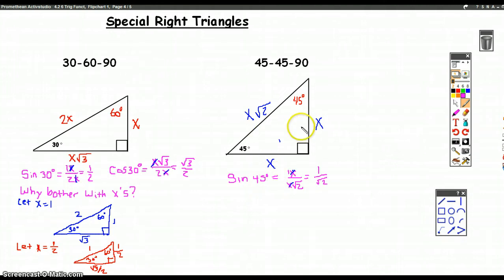So the same thing's going on here. We might as well, if the X's keep canceling, let's just do our favorite version of the 45-45-90. And mine, again, is letting X equal 1.